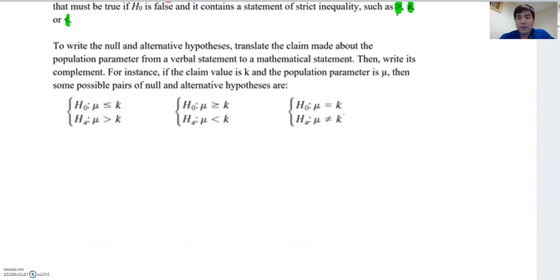When you look at these three different setups: if H0 is mu is less than or equal to k, then alternative must be bigger than k. If H0 is greater or equal to k, then HA is less than k. Or mu is equal to k, then alternative is not equal to k.